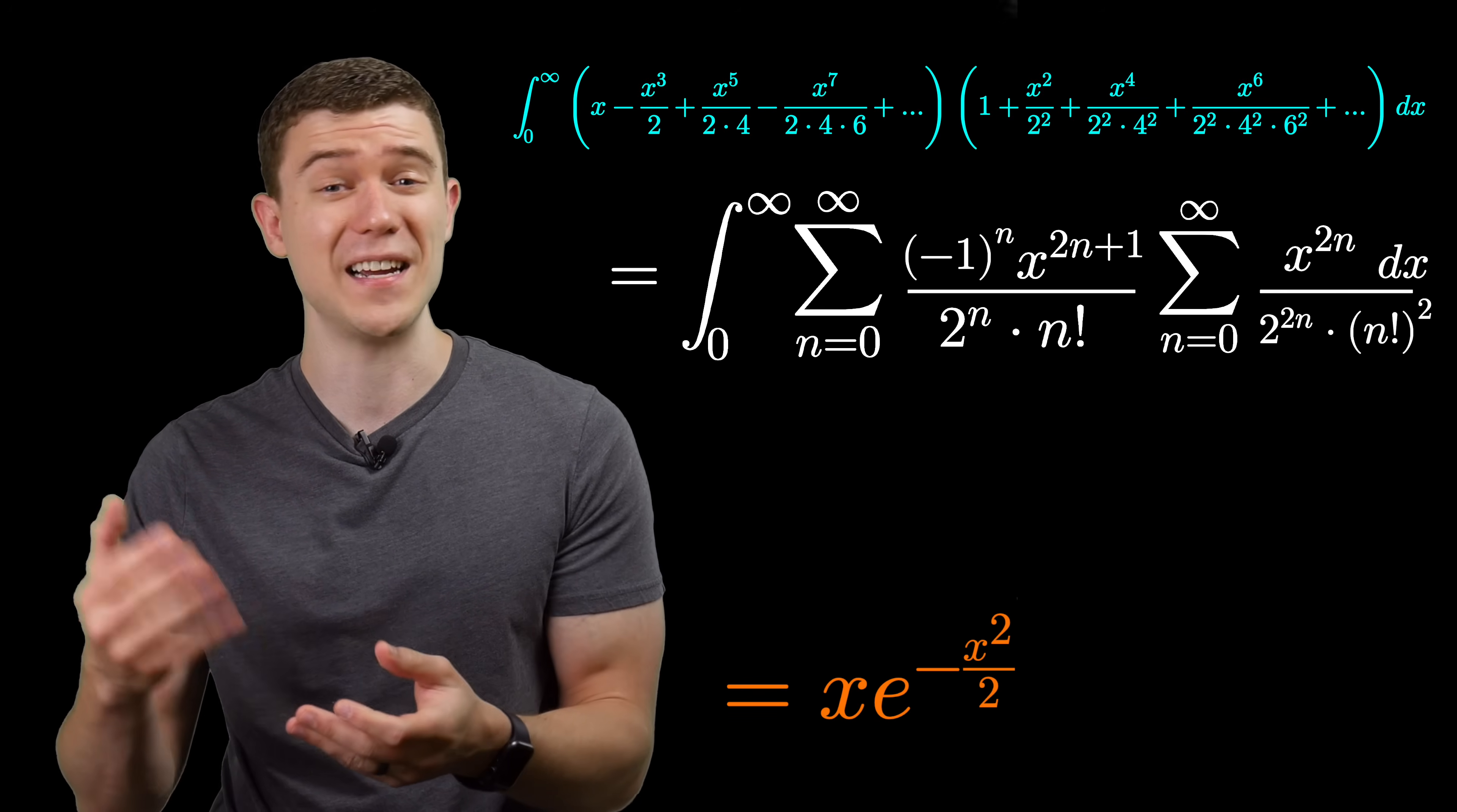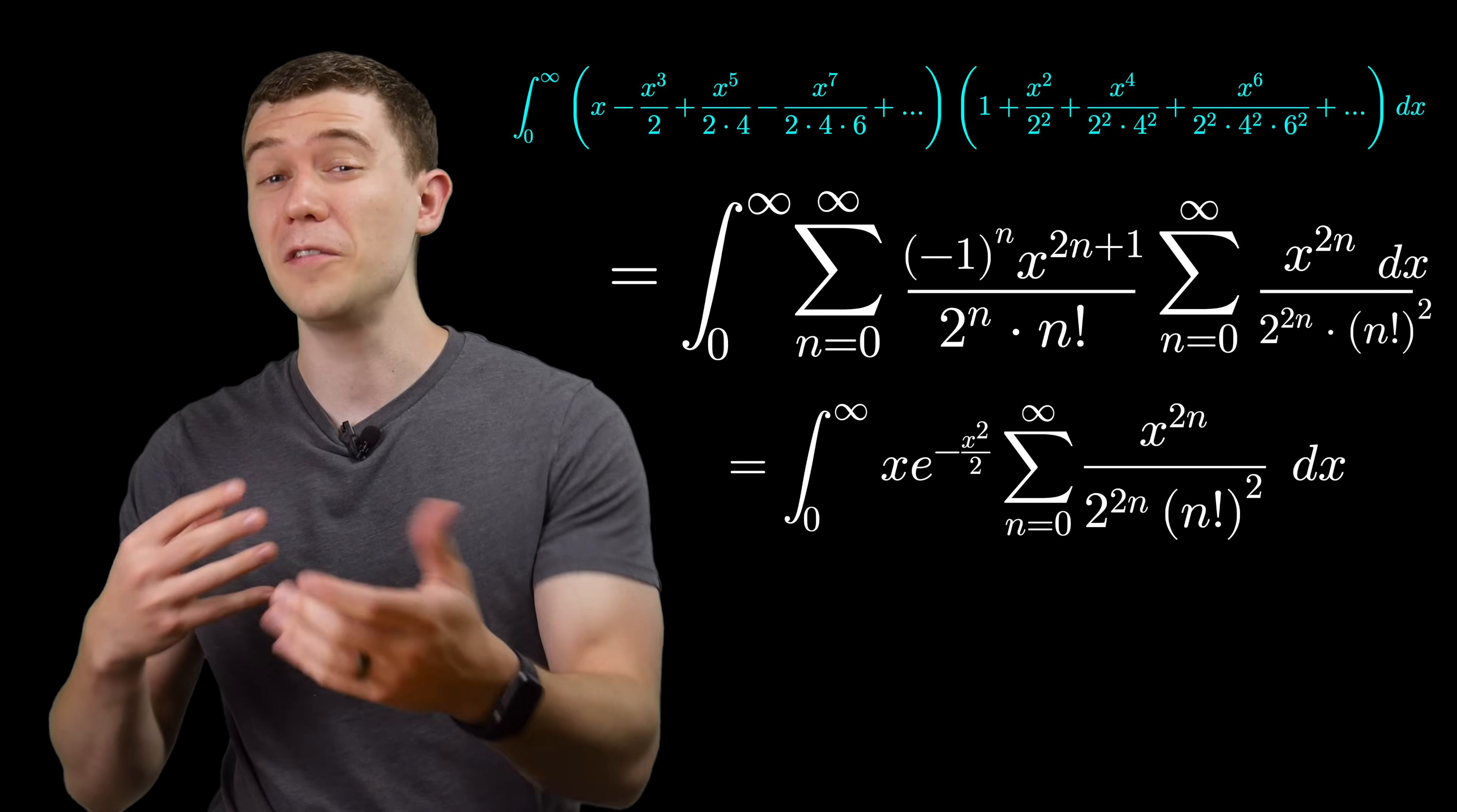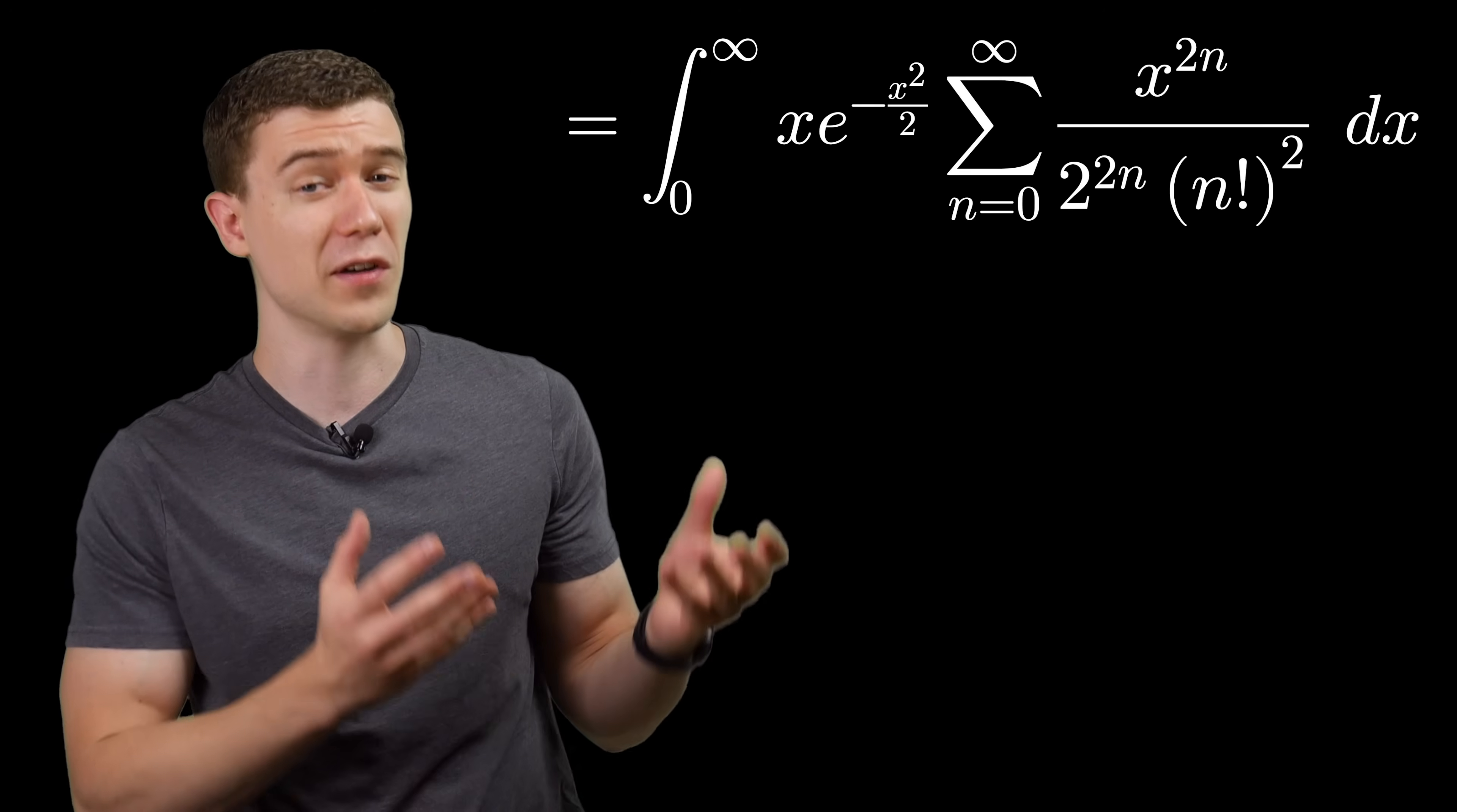That second sum has an n factorial squared in the denominator. I don't know a great power series to take advantage of that, so we'll just leave it alone for now. Although you could try to rewrite that sum in terms of some cosine power series, or maybe even you could try integration by parts here,